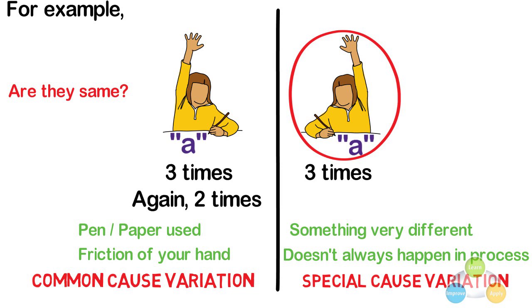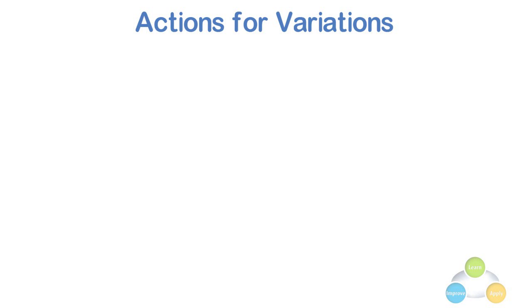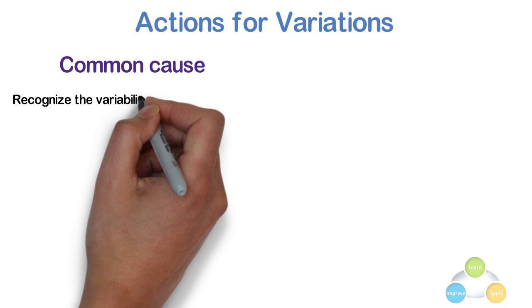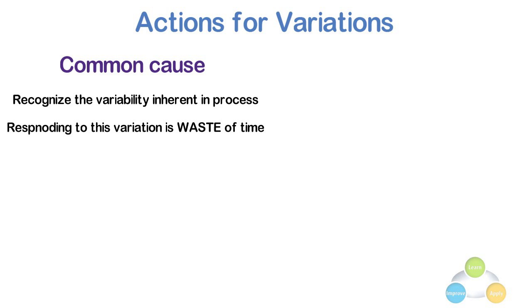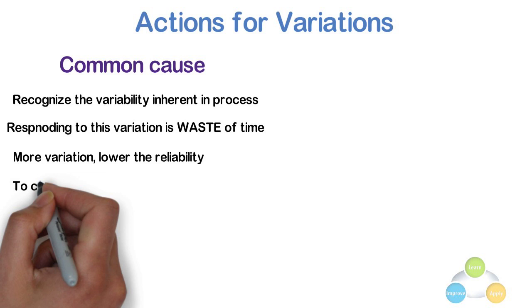Then what are the actions we should take in case of Common Cause and Special Cause? In Common Cause, recognize the variability inherent in the process. Responding to this variation is a waste of time. However, the more variation, the lower the reliability. To change the results, change the process.